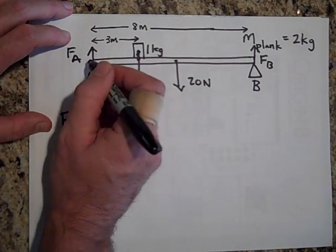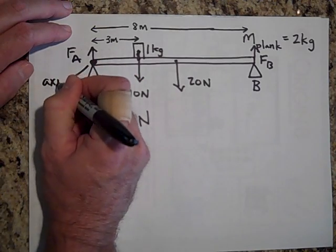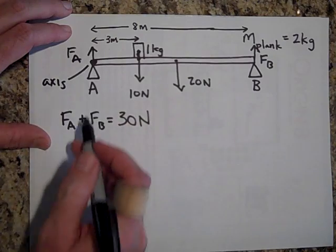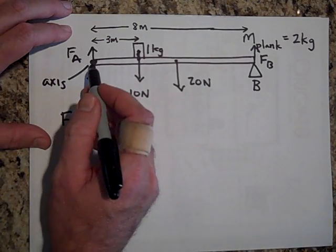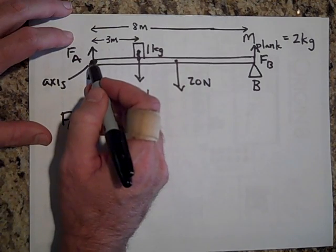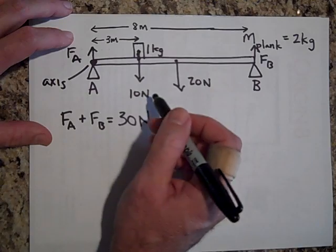I'm going to make this my arbitrary axis right there. That's going to be my axis. The reason I'm doing that is because then this won't put a torque on it at all. F_A will not put a torque on this because it's going through the axis. The lever arm is zero.